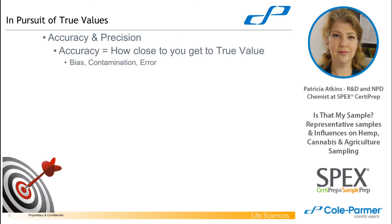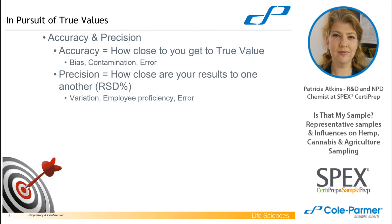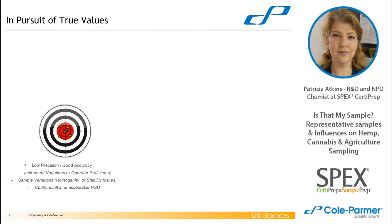Accuracy is how close you get to that true value, and precision is how close your results are to one another. We often say that's percent RSD. Accuracy can be changed by bias, contamination, or error, where precision can be changed by variation, maybe employee proficiency, or some sort of mistake or error.